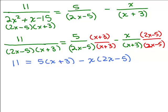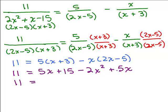So the next step is to do the distributive property here. So I have 11 equals, and we're going to distribute, 5x plus 15 minus 2x squared. And remember, this is a minus x times a minus 5. That will be a plus 5x. Let's just simplify one more step here by adding the 5x and the 5x. So we've got negative 2x squared plus 10x plus 15.